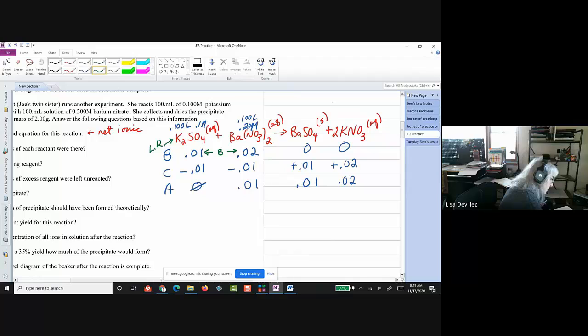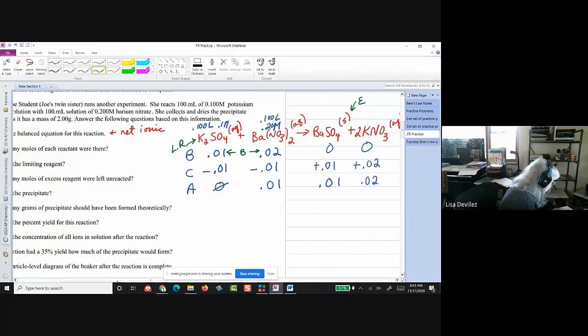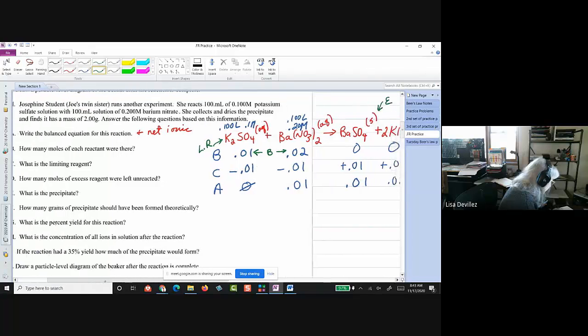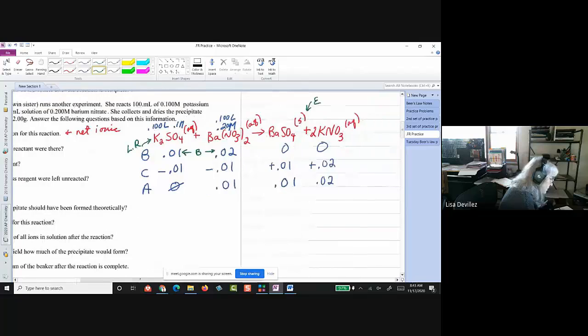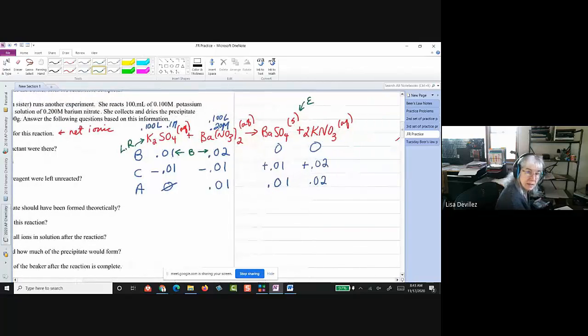So that's part E. All right, is what is the precipitate, right? Let me, yeah. All right. And then it wants to know how many grams should have, should form theoretically. So, I've got to get my molar mass.